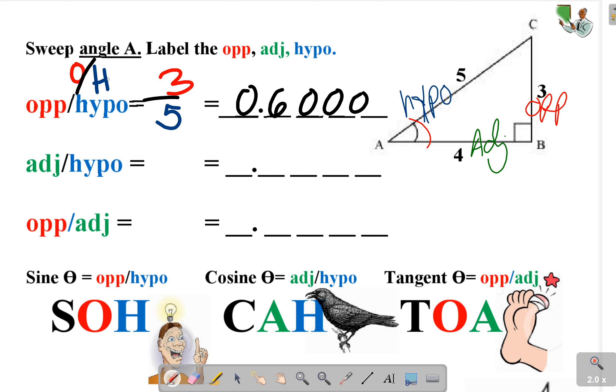Then there's a second one, which is adjacent over hypotenuse, and in this case our adjacent is 4, our hypotenuse is 5, four-fifths of a dollar is 80 cents.